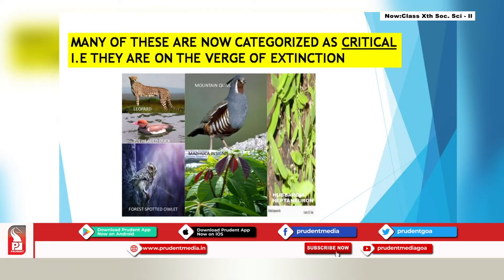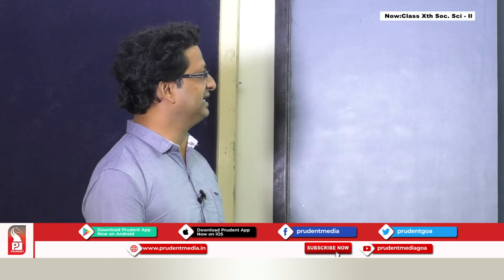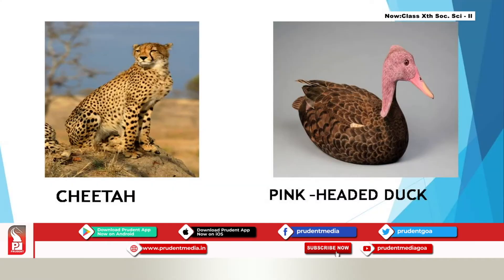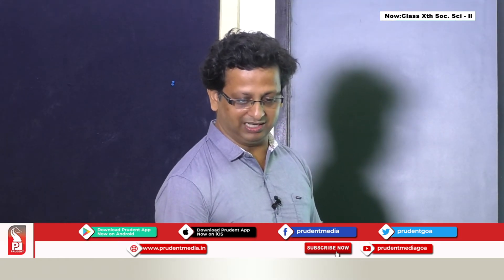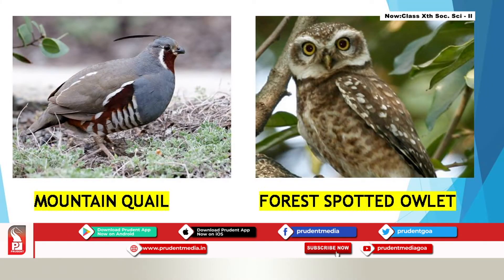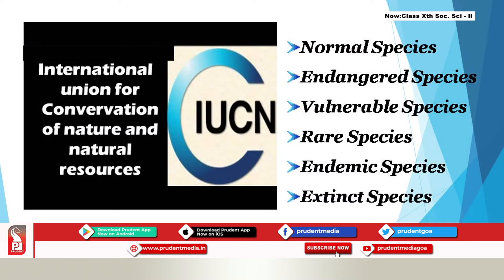Examples of critical species include the mountain quail, the pink-headed duck, the forest spotted owlet, plants such as Hubbardiya heptaneuron, Madhuca, and Cygnus, and the cheetah — wrongly spelled as leopard on the screen. All these species of plants and animals are critical and some have become extinct in parts of the world.